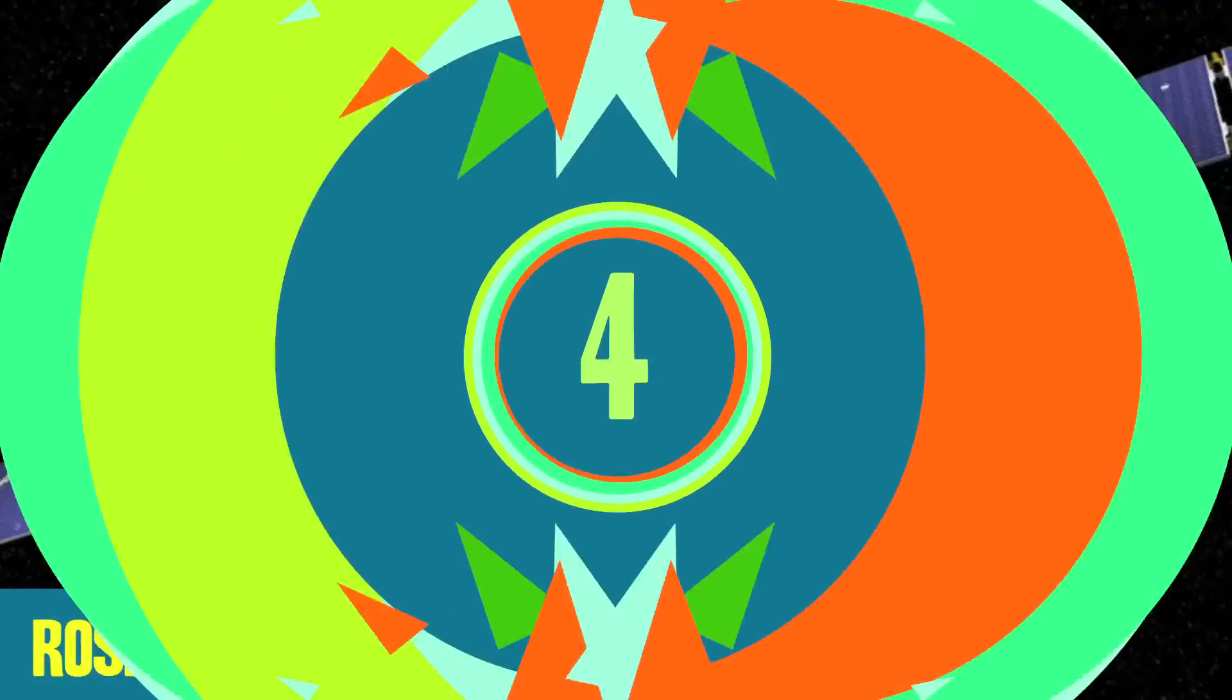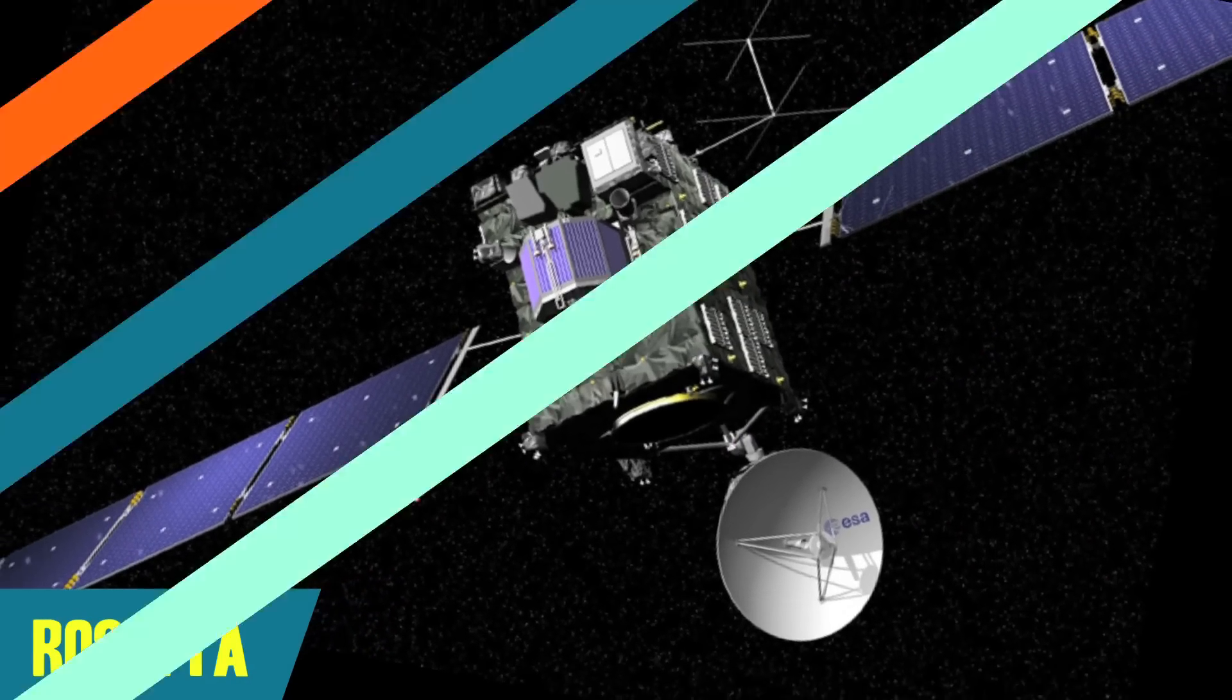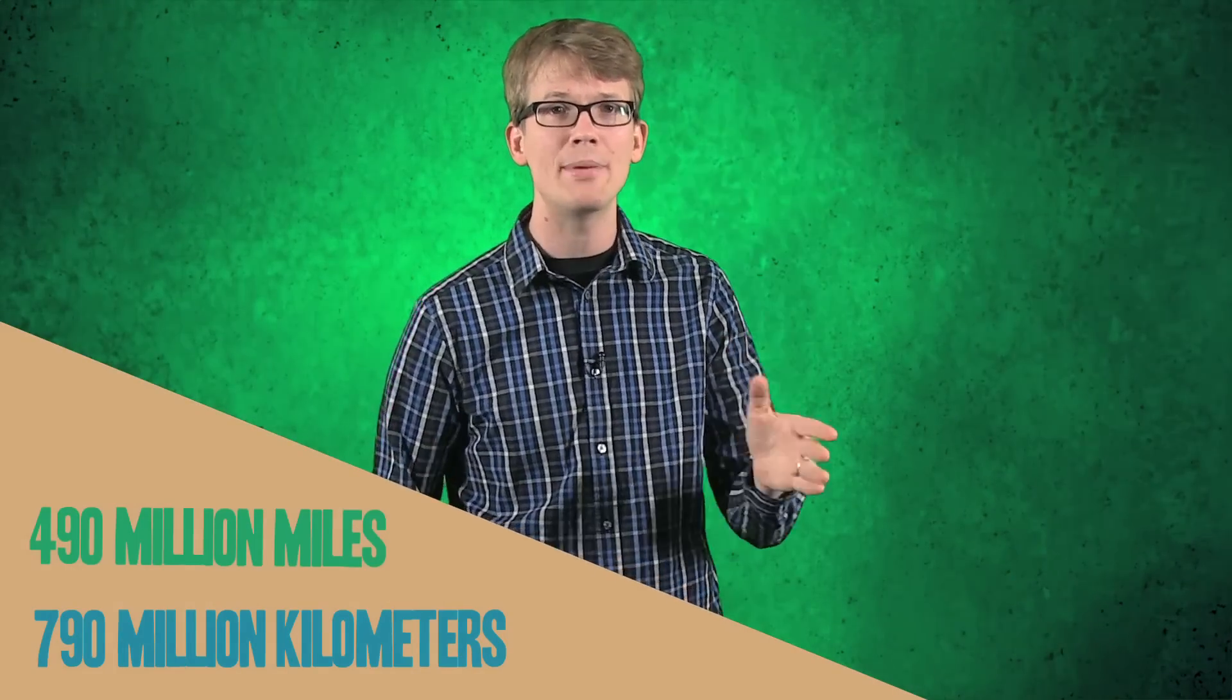Number four. Finally, the European Space Agency's Rosetta is scheduled in May 2014 to become the first spacecraft to undertake the long-term exploration of a comet at close quarters. It's gonna land on the thing. Launched in 2004, Rosetta will have traveled 790 million kilometers by the time it enters orbit around Comet 67P, also known as Churyumov-Gerasimenko.